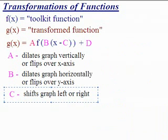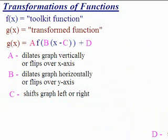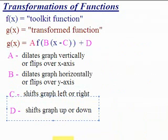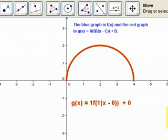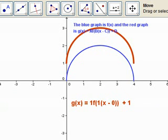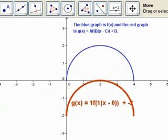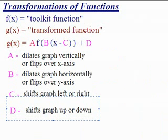The last parameter is D. D does something similar to C — it doesn't change the shape of the graph, it just shifts the graph up or down. When D becomes 1, the graph shifts up 1. Making D negative 1 shifts it down. These four parameters affect not just this function — they affect all functions exactly the same way.